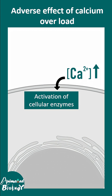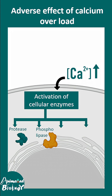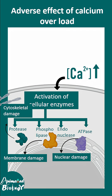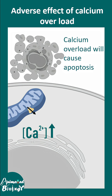When there is too much calcium, several enzymes in the cytosol are activated. These include proteases, phospholipases, endonucleases, and ATPases. Proteases break down cytoskeletal elements, making the cell dysmorphic. Phospholipases can damage the membrane. ATPases and endonucleases affect DNA and ATP, leading to ATP depletion as well.